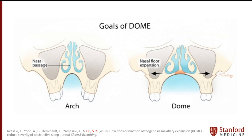DOME was designed to reverse these anatomical changes in adults with obstructive sleep apnea and nasal obstruction. This approach increases the cross-sectional area of the internal nasal valve by widening the nasal floor, a dimension not addressed by other nasal procedures. DOME results in slower nasal airflow velocity, which prevents excessive negative pressure that collapses the pharyngeal airway in OSA.